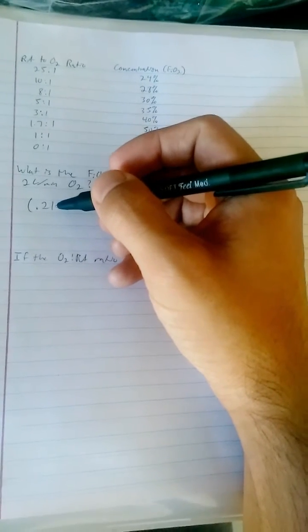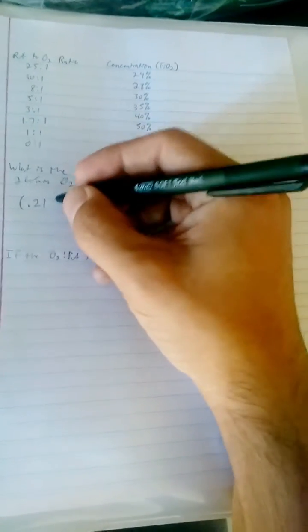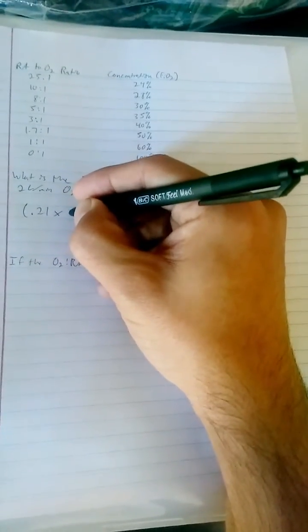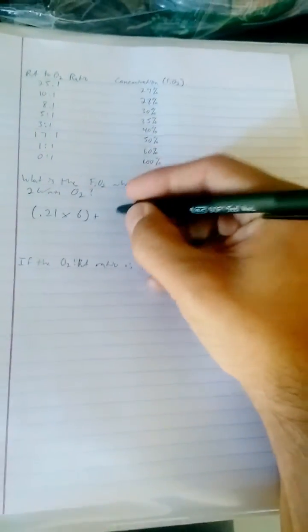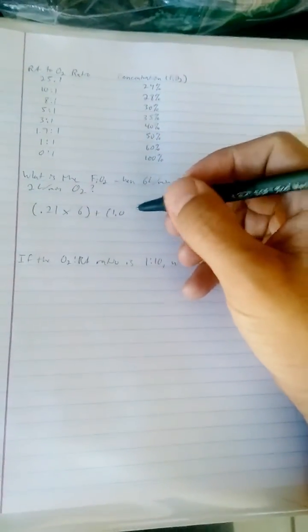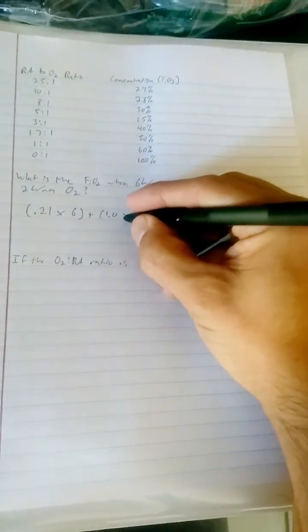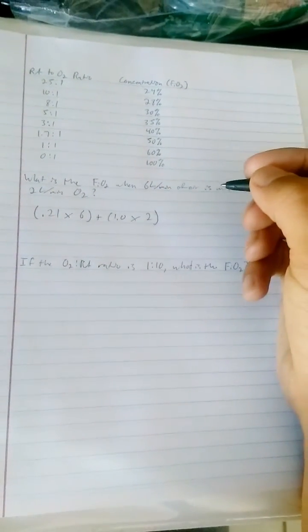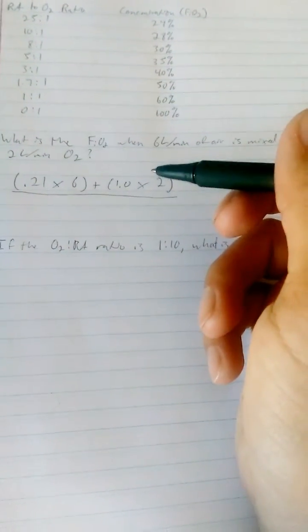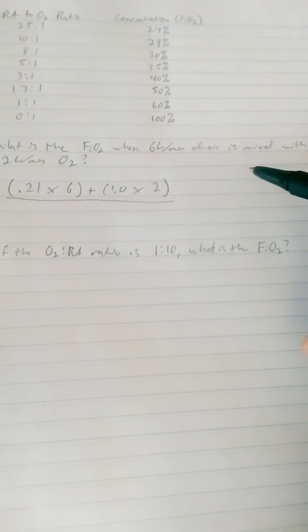0.21, the percentage of oxygen that exists in room air times that room air value, 6 liters. So 0.21 times 6 plus 1, which is 100 percent oxygen, times the volume of oxygen we're giving, which is 2. All of that is going to get divided by the sum of the given ratio. So in this case, 6 plus 2 is 8.